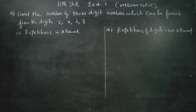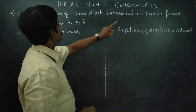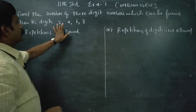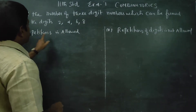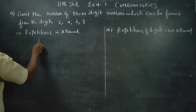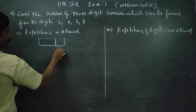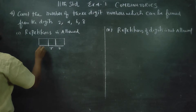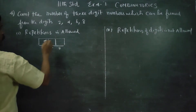Hello Class 11 students. In exercise 4.1, combinatorics using the fundamental principle of counting, we want to find how many three-digit numbers can be formed using the digits 1, 2, 3, 4. For a three-digit number, we have a units place, a tens place, and a hundreds place.